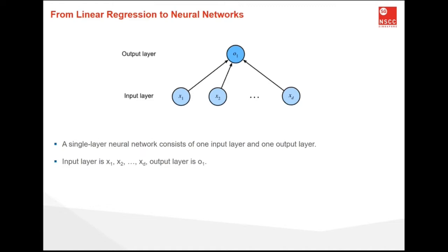To begin, let's start by rewriting things in layer notation. Deep learning developers like to draw diagrams to visualize what is happening in their models. In this simple diagram, we depict a linear regression model as a neural network. Please note that these diagrams highlight the connectivity patterns, such as how each input is connected to the output, but not the values taken by the weights or biases.